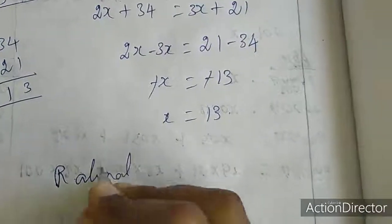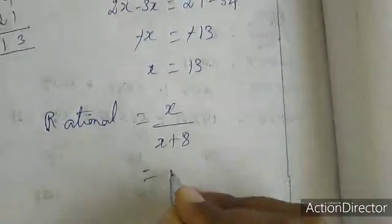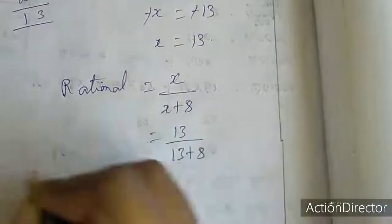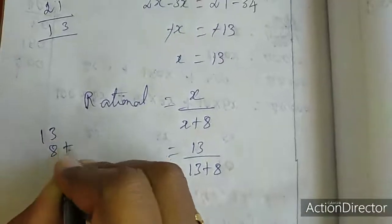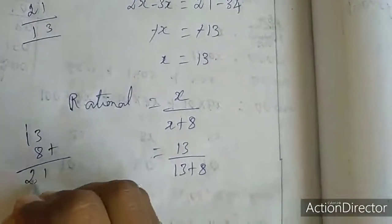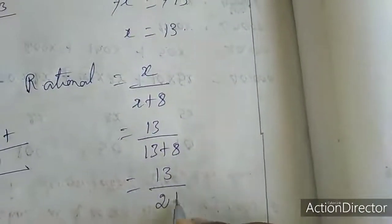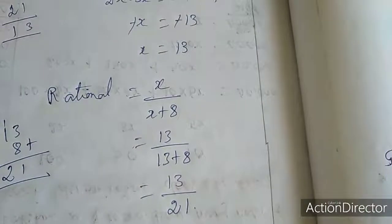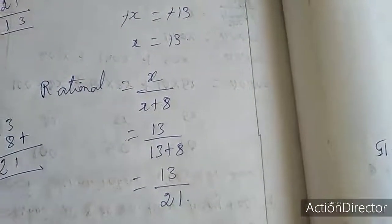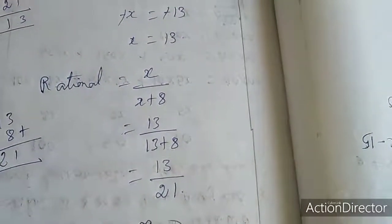The rational number is x divided by x plus 8. The x value is 13, so 13 divided by 13 plus 8, that is 13 by 21. So the rational number is 13 by 21. That is all — the exercise is completed, as well as the chapter. Next week we will continue with the new chapter and new exercise. Thank you, dears.